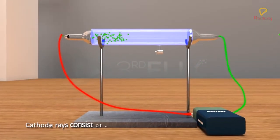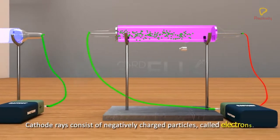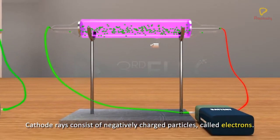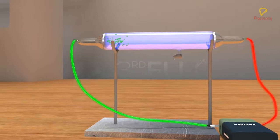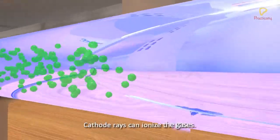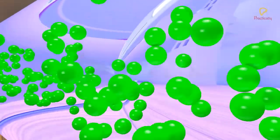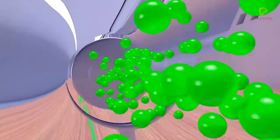When cathode rays were allowed to pass through different gases, glows of different colors were observed in the tube. These different colors were seen due to the ionization of gases. This confirmed that cathode rays could ionize the gases.